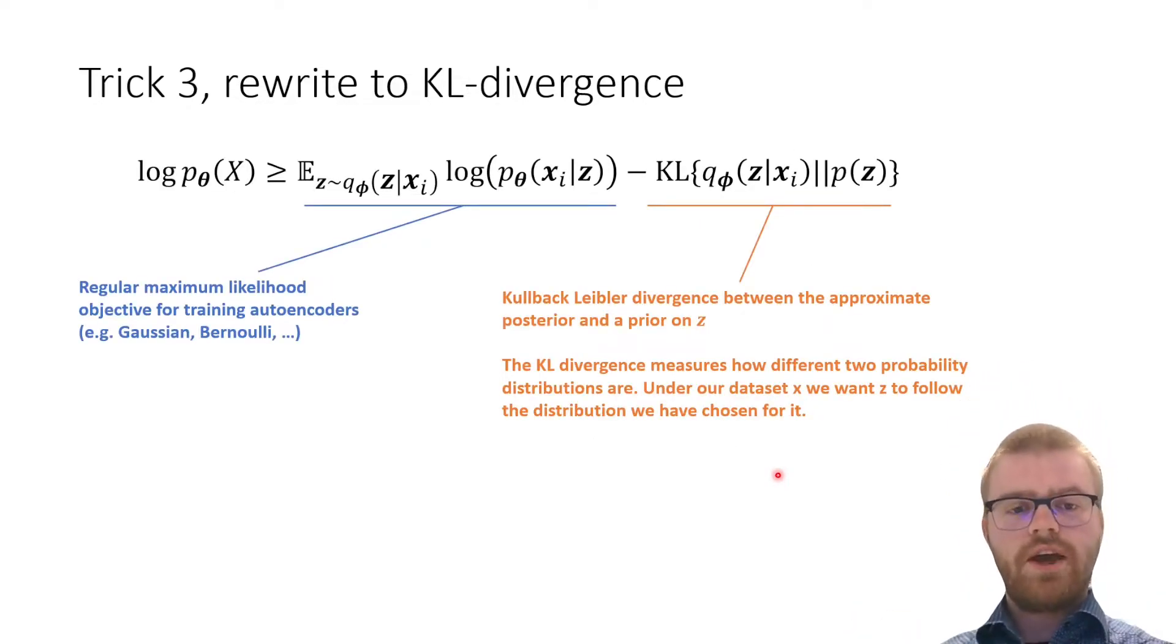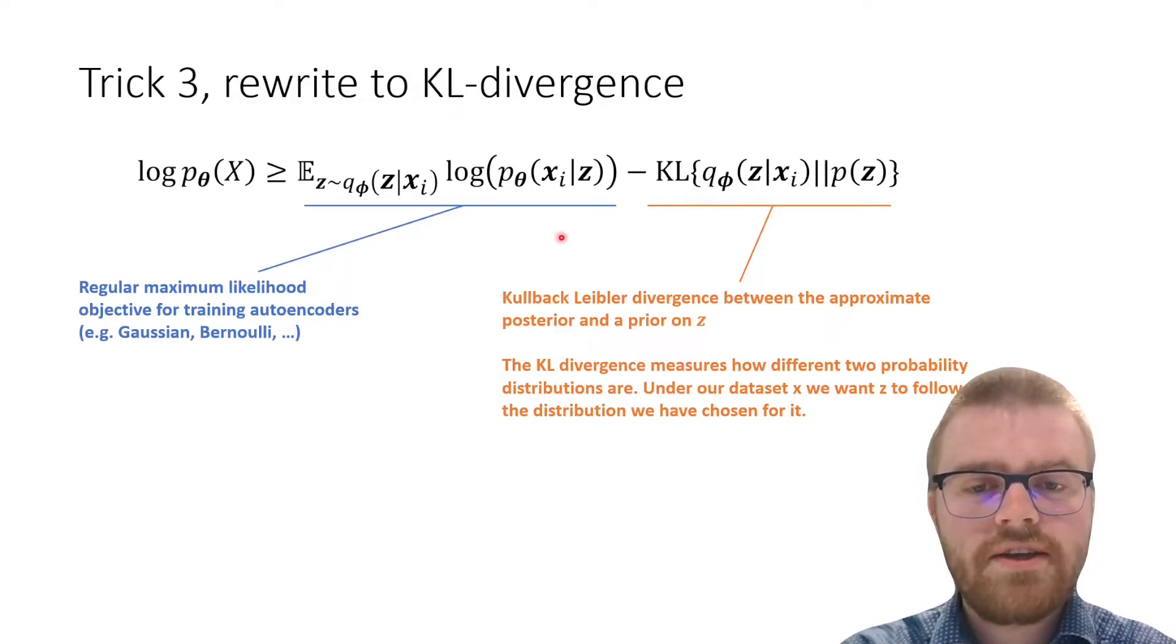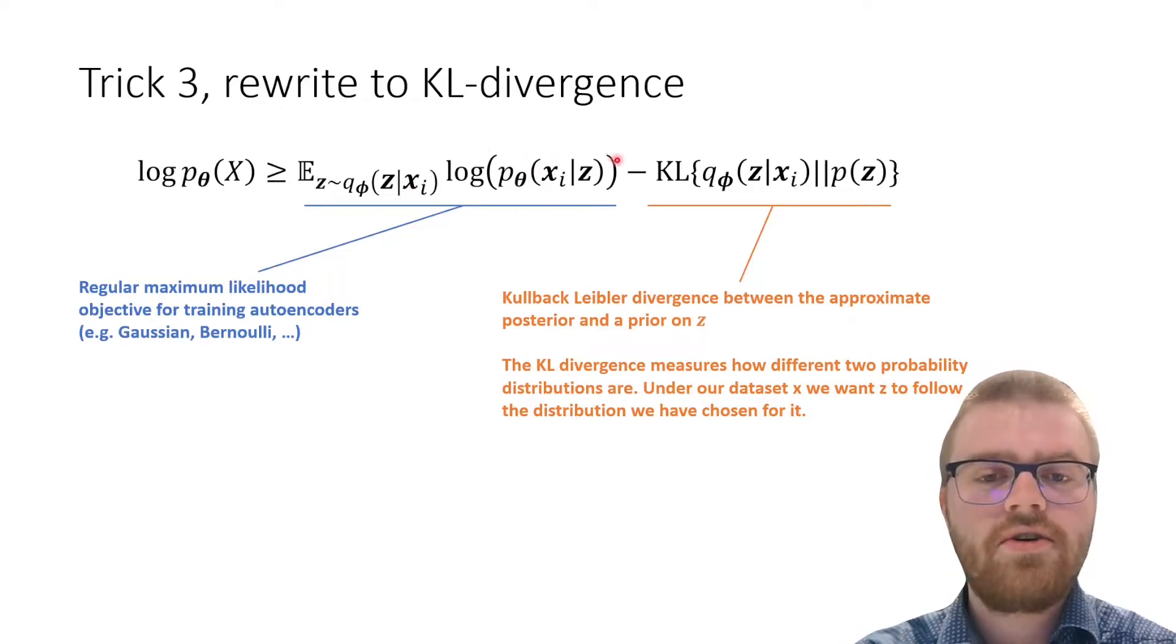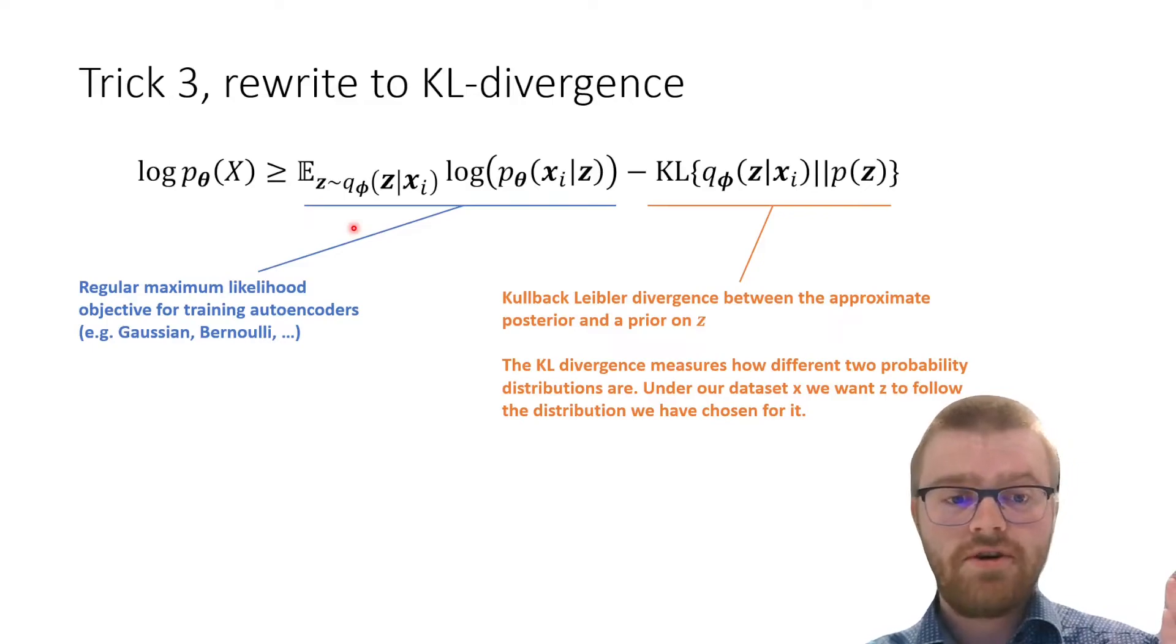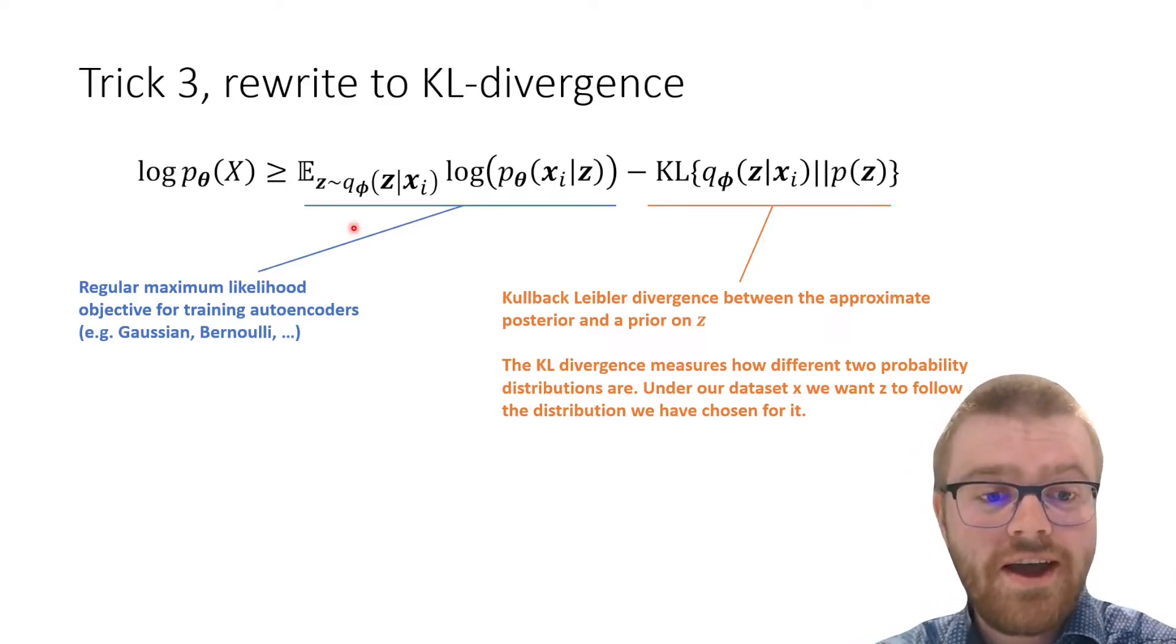We have rewritten to KL divergence and now we get two terms. On the left we get an expectation. We get the expectation over the encoder and then the logarithm of the decoder, which is actually regular maximum likelihood estimation. If you were to write this out for a Gaussian error, you just get the mean squared error.